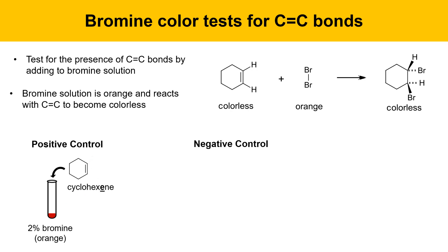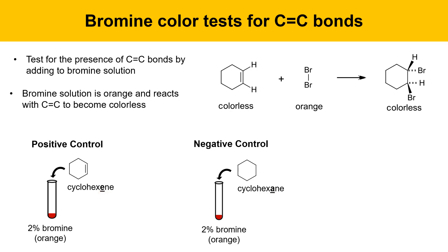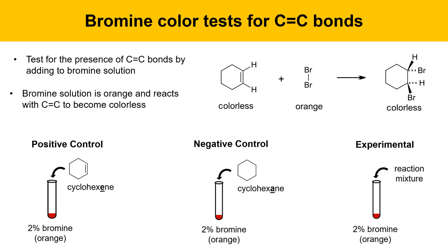Then we'll do a negative control — add cyclohexane (note: A versus E, these are very different species) to the bromine solution. Cyclohexane has no alkene functional group and will give a negative test, while cyclohexene has a double bond and gives a positive test. Finally, we'll do the experimental sample — add the distilled reaction mixture to bromine solution and observe whether we get a positive test confirming double bond presence, or a negative test indicating the reaction didn't work.